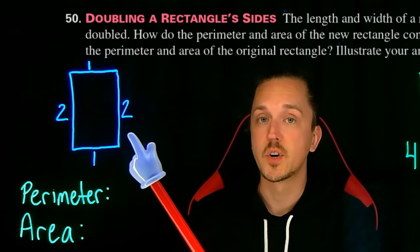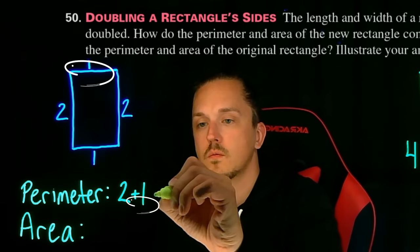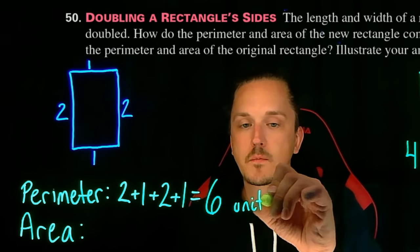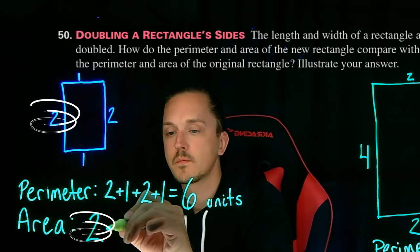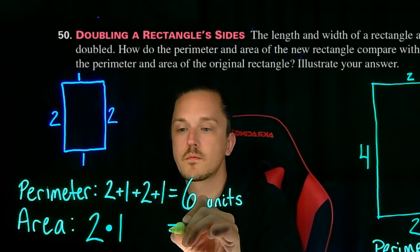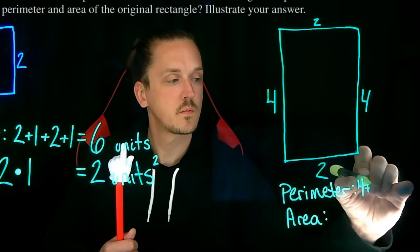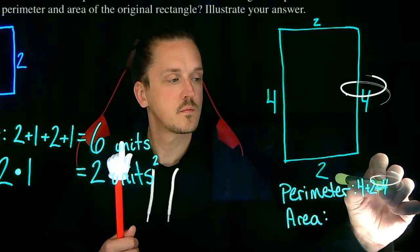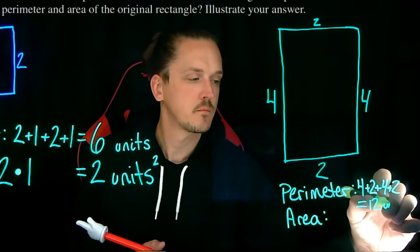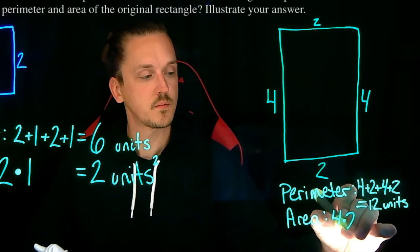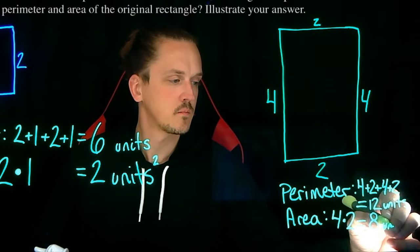Our first rectangle has a perimeter of two plus one plus two plus one or six units, and an area of length two multiplied by width one or two square units. Our second rectangle has a perimeter of four plus two plus four plus two or twelve units, and an area of length four multiplied by width two or eight square units.